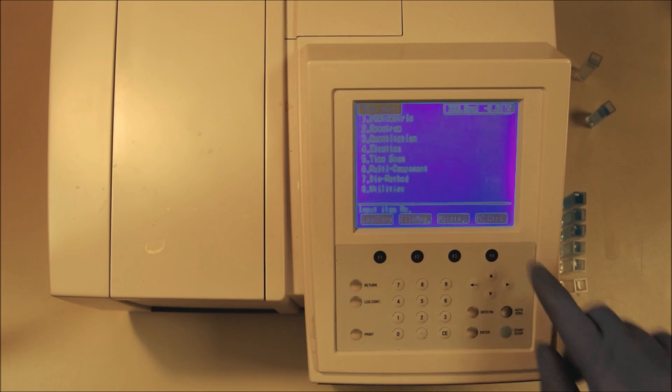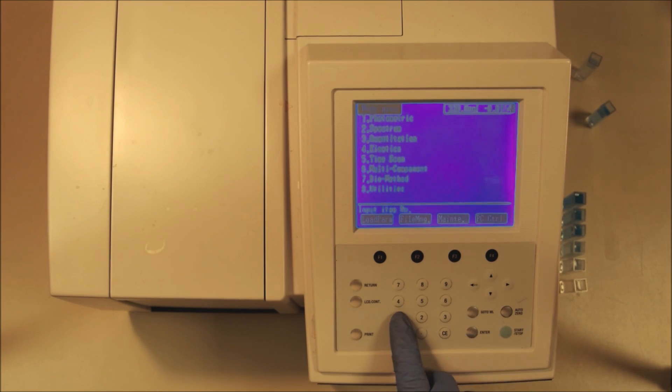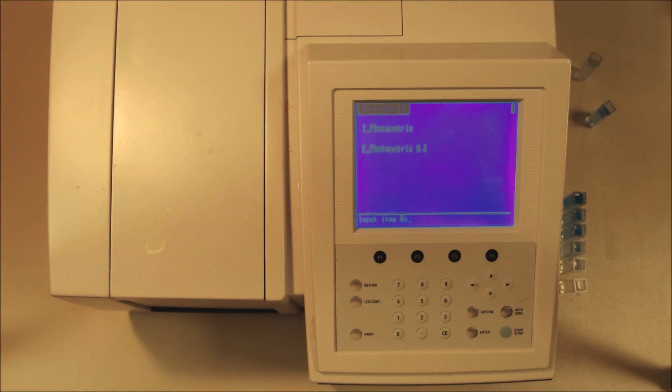Now let's look at the spectrometer. The first thing we're going to do with the spectrometer is set up the method that we wish to use. We want to do photometry at a single wavelength so we set the first option and then the first option again and we're doing single wavelength measurements.